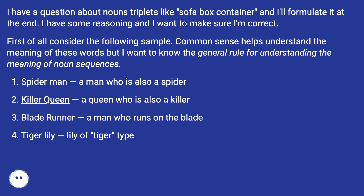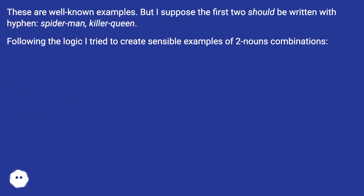First of all, consider the following samples. Common sense helps understand the meaning of these words, but I want to know the general rule for understanding the meaning of noun sequences. Spider-Man: a man who is also a spider. Killer Queen: a queen who is also a killer. Blade Runner: a man who runs on the blade. Tiger Lily: a lily of tiger type. These are well-known examples, but I suppose the first two should be written with a hyphen: Spider-Man, Killer Queen.